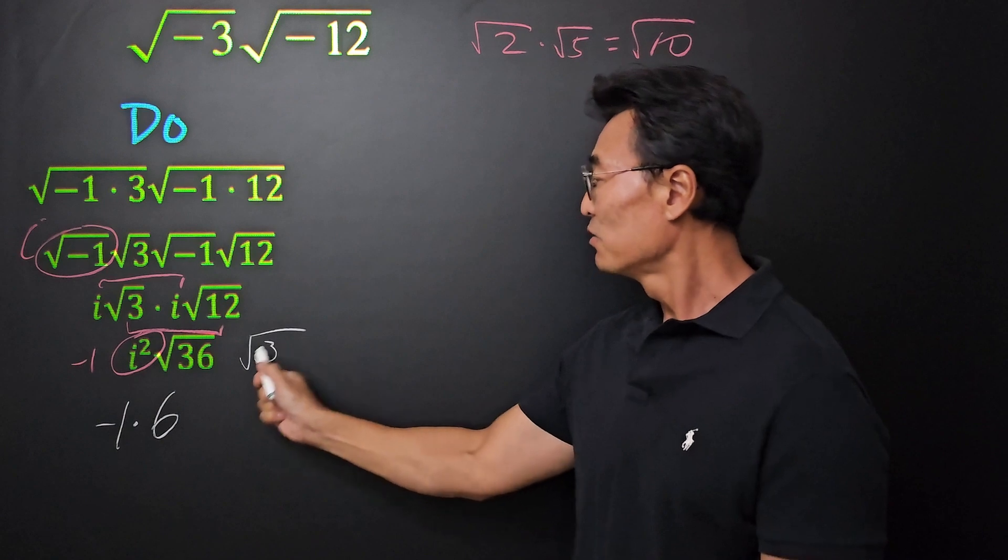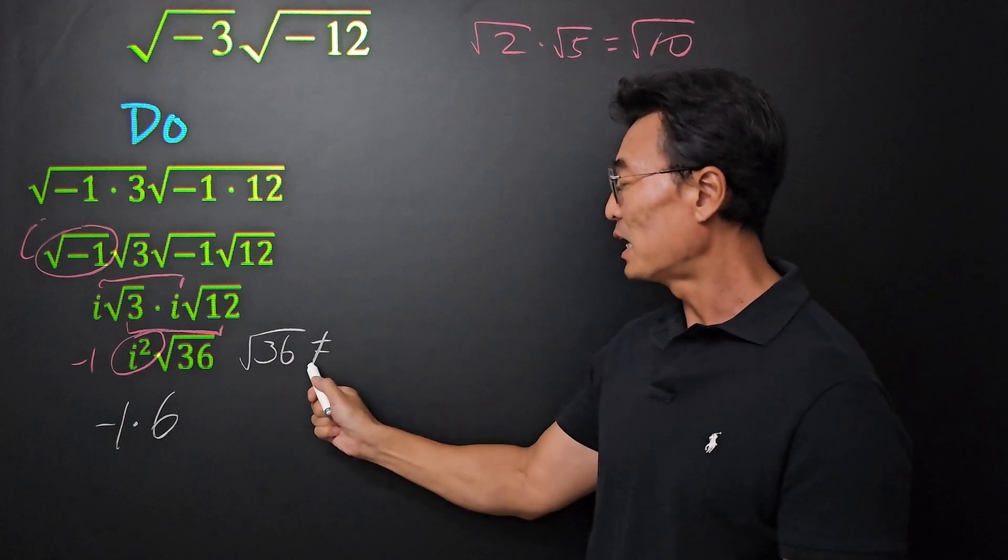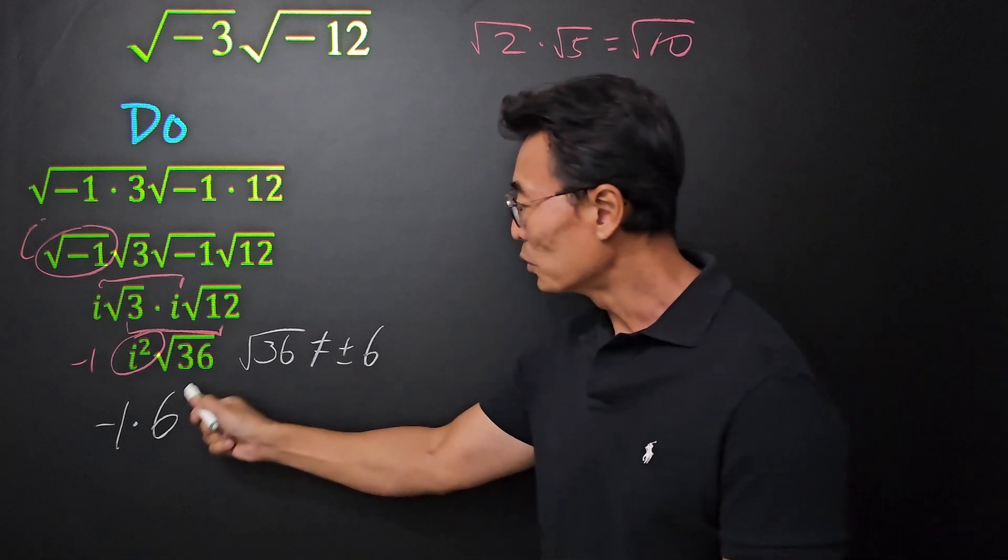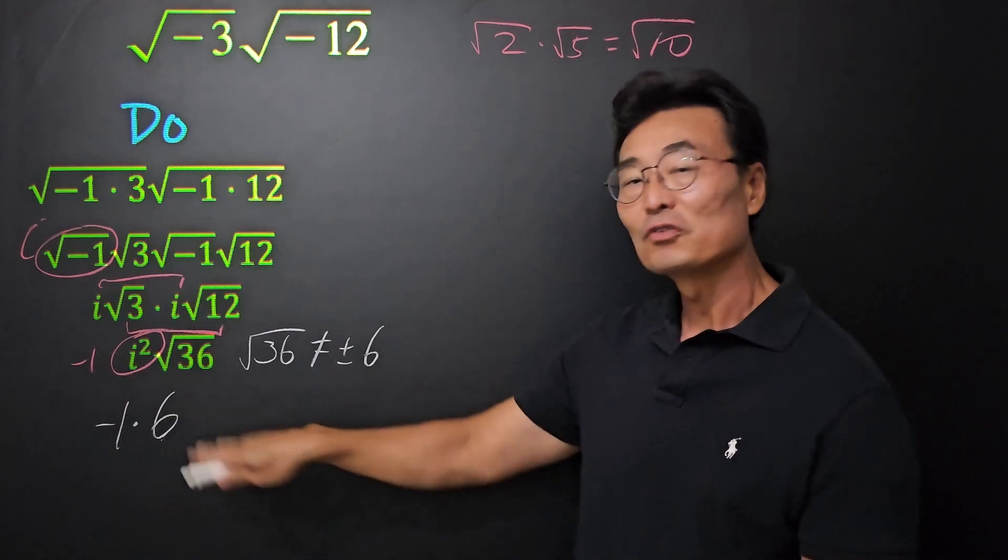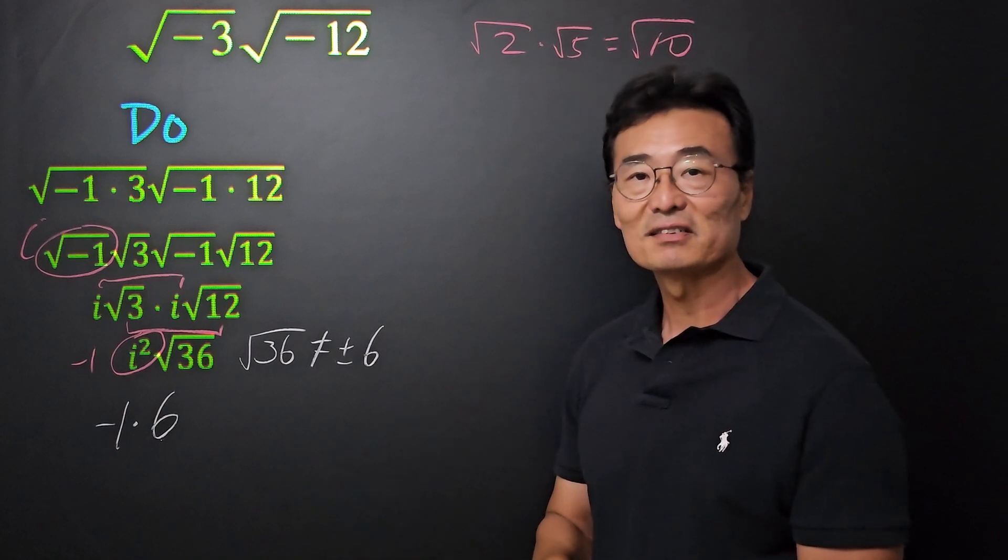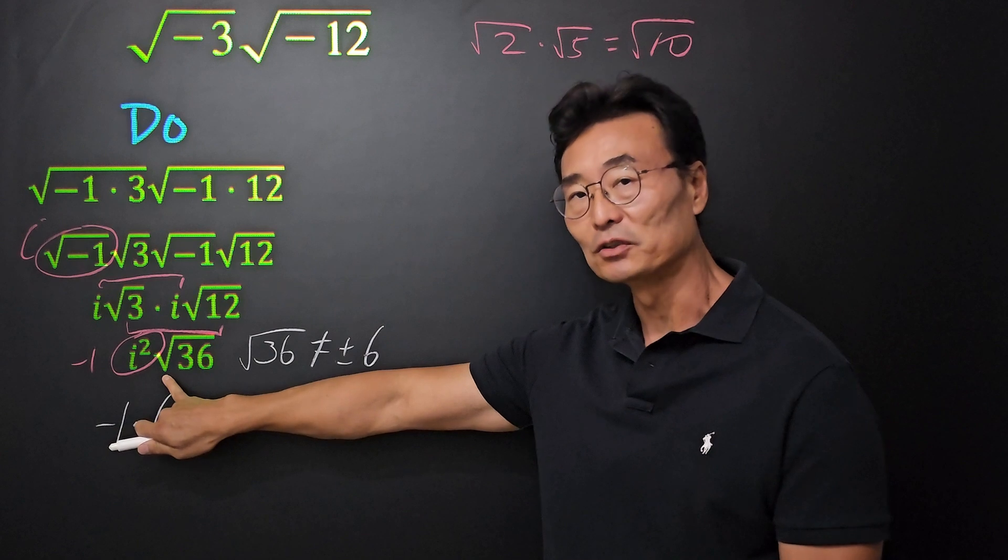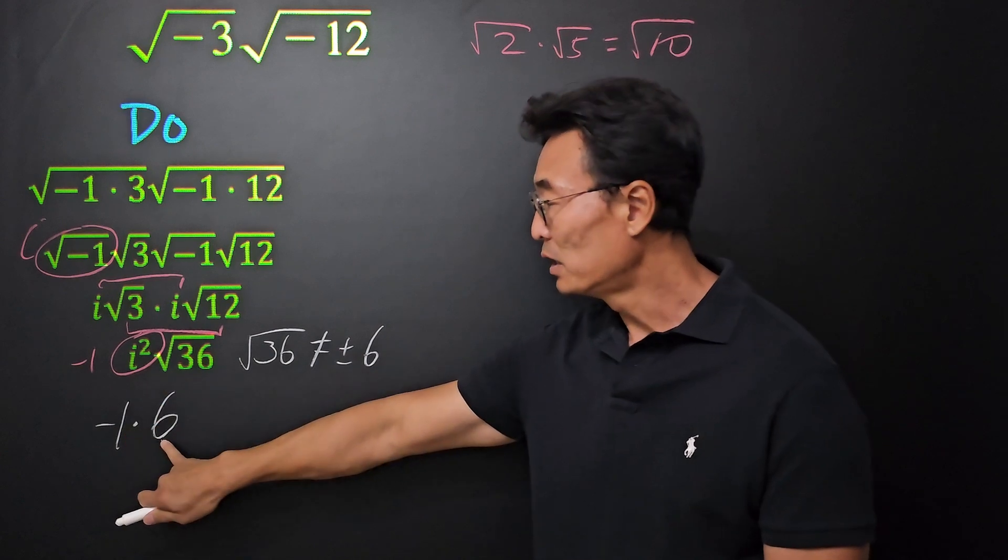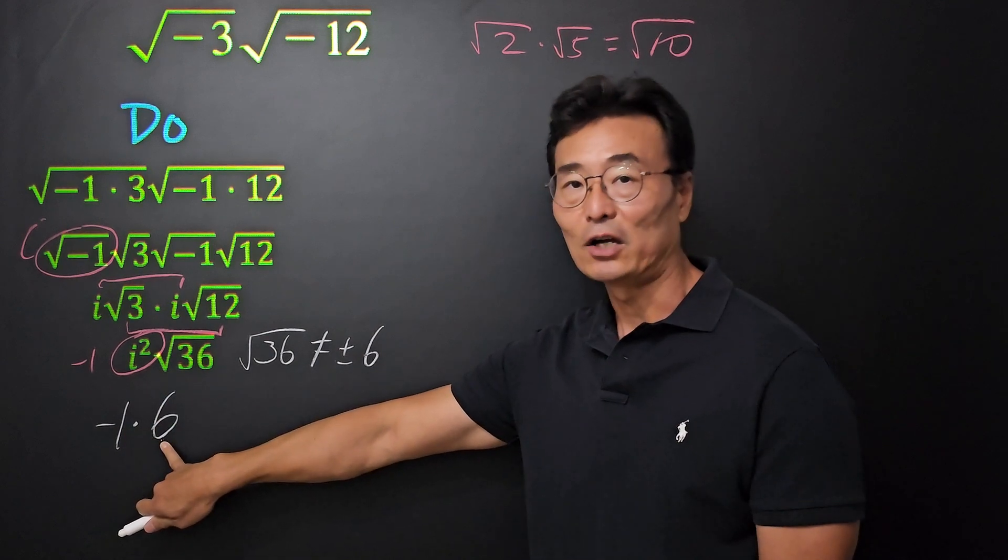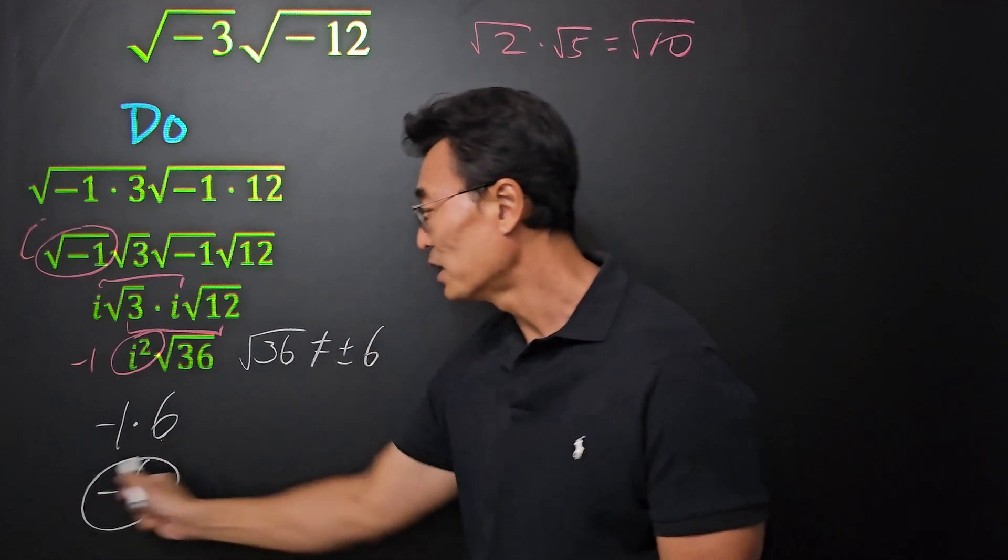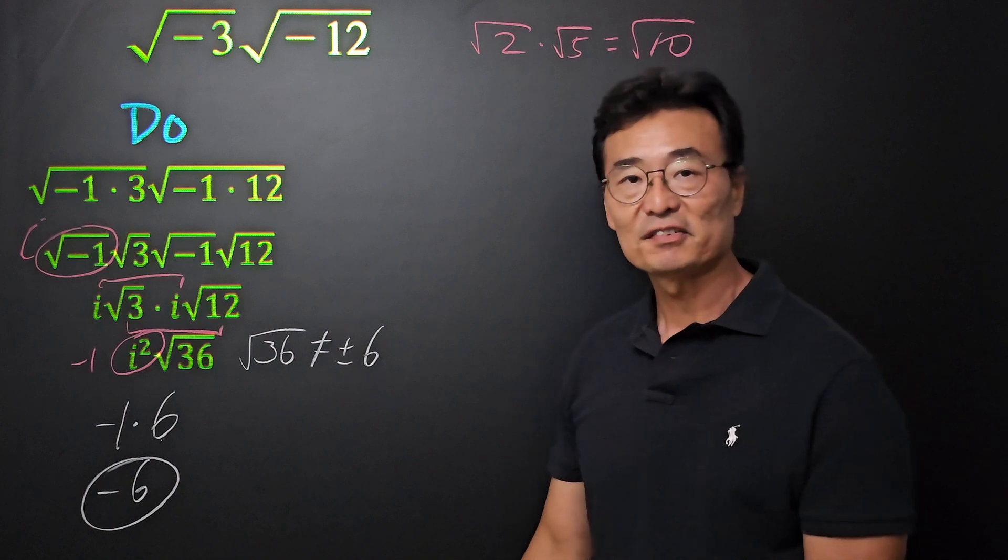So again, to iterate, square root of 36 does not equal to plus minus 6. It only equals positive 6, even though square root of 36 is plus minus 6. But when we use that radical sign, we only use the principal root or just the positive root. I hope everybody understands that. So we end up getting final answer of negative 6.